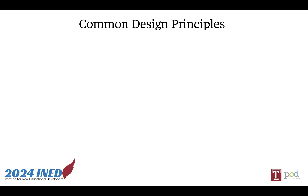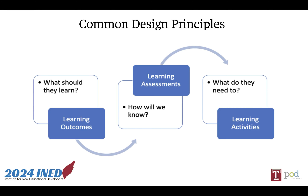Many of these concepts and frameworks, although they've come from different spaces, have common design principles. It may not be important to know them all by name, but as an educational developer it's very useful to understand these principles. Common among all these frameworks are backward design and alignment. Backward design is simply the idea that you start with the end in mind — you start by thinking of the kind of learning you want students to achieve by the end of a course, and then back that up to think through what needs to happen and when to achieve those goals.